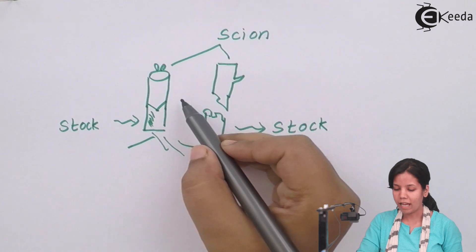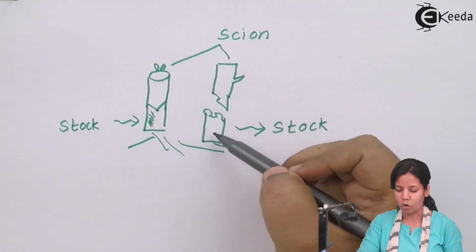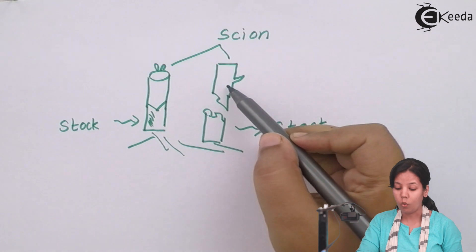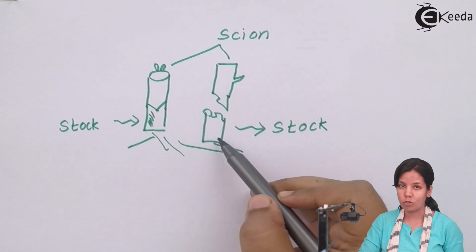Here you can see how grafting is done using scion and stock. The upper part is scion, whereas the lower part is the stock or the part which is present inside the soil.